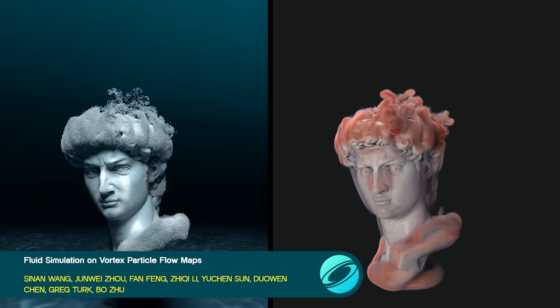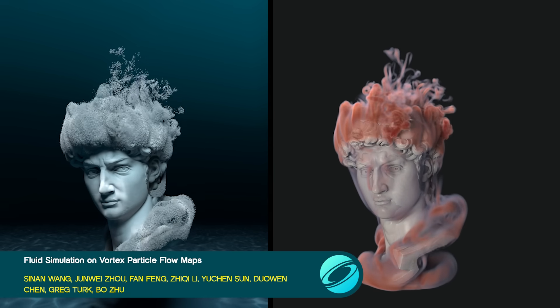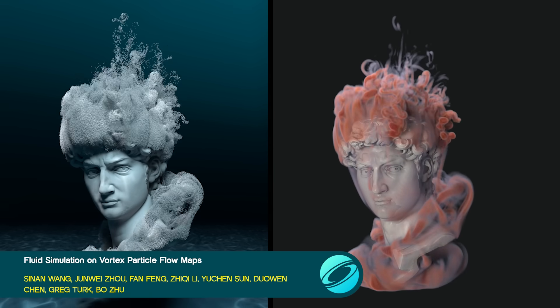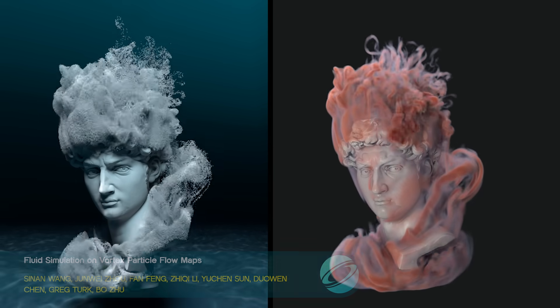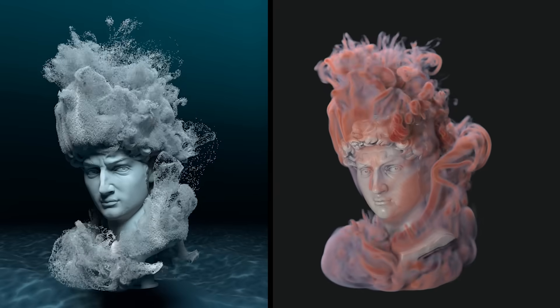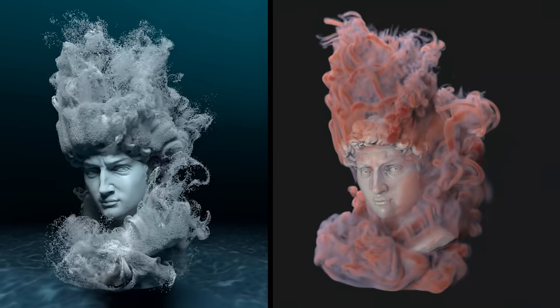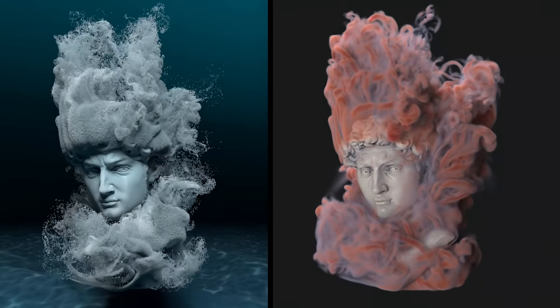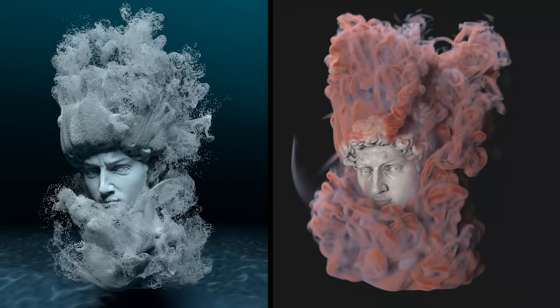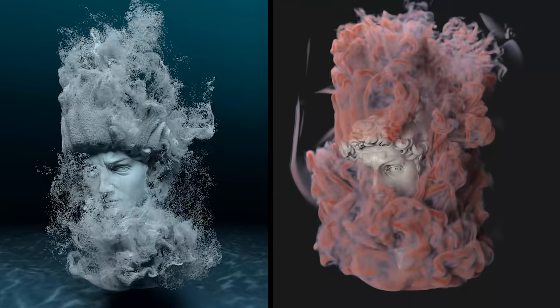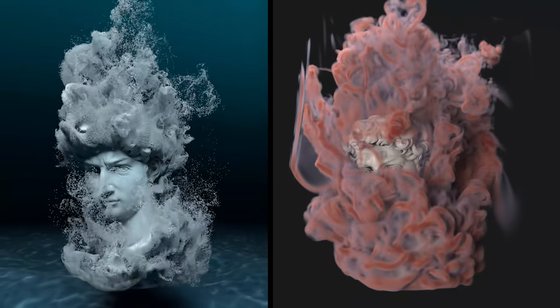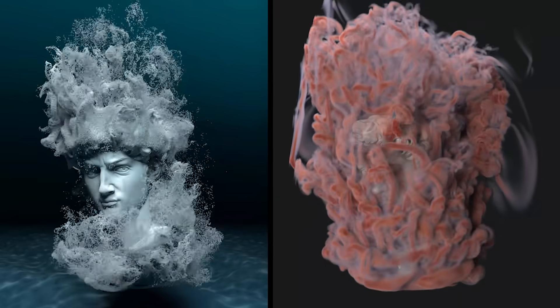The Vortex Particle Flow Map method updates the vortex-in-cell method by tracking higher-order quantities along with vorticity. It can preserve vortex structures 30 times longer than the previous state-of-the-art.